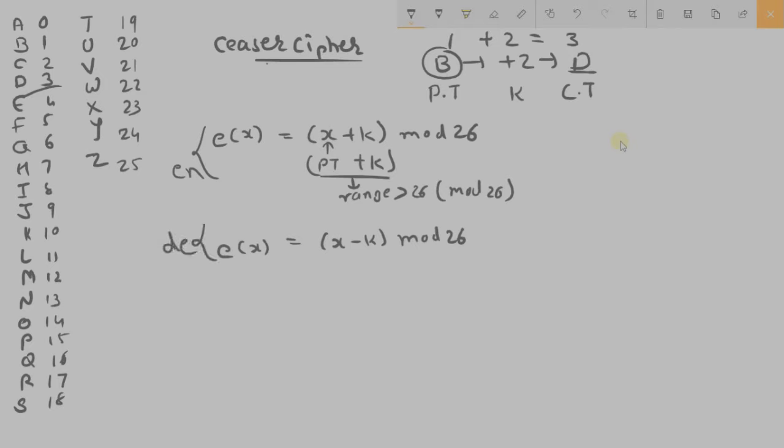So now let us take an example that how actually Caesar Cipher works. Plaintext might be HELLO and our key is 3. So we will add each of this character with 3. H plus 3, E plus 3, L plus 3, L plus 3, O plus 3.